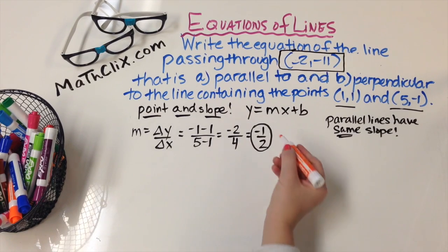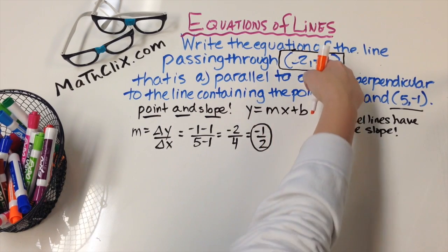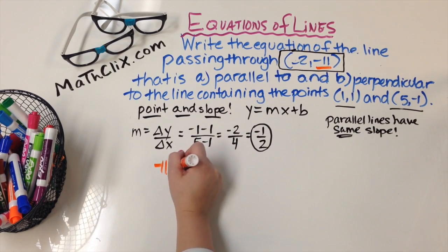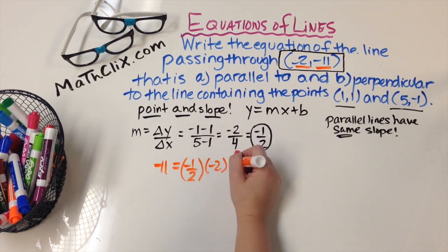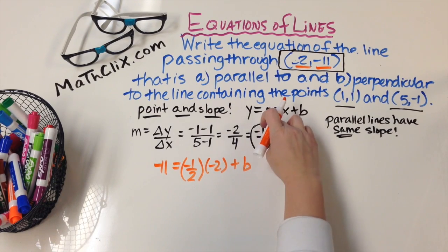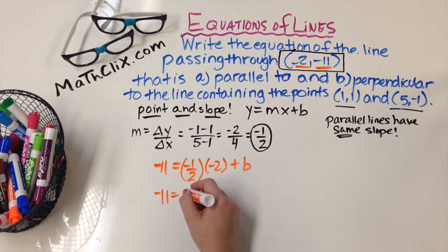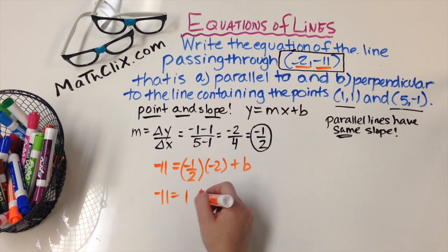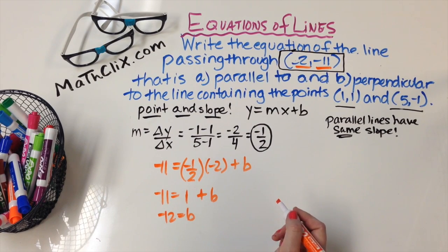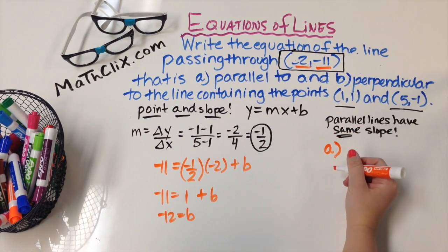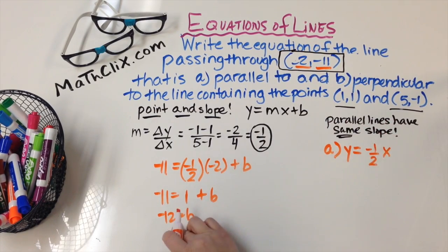So for part a, to find the line that's parallel, you're going to use negative one half for your slope. Put negative 11 in for y, m is negative one half, and x is negative 2, then find b. Once we know m and b, we have the equation. You have negative 11 equals positive 1 plus b. Subtracting 1 from both sides, b equals negative 12. So for part a, the equation is y equals negative one half x minus 12.